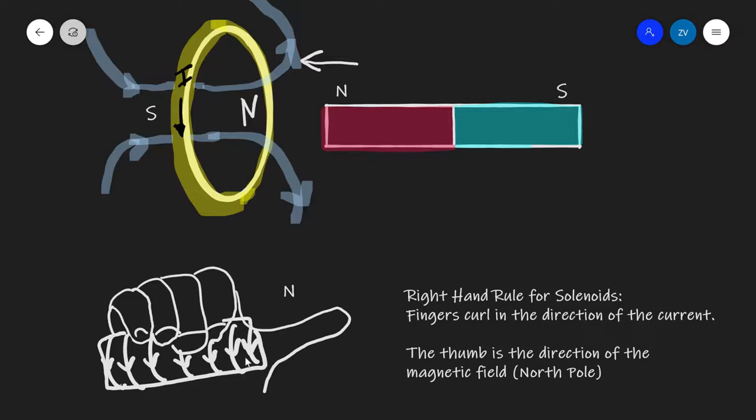If that's the case, the thumb will provide the direction of the magnetic field, in other words, the north pole. So if we have a solenoid in which the current is going down like this, then the north pole will be located on this side.